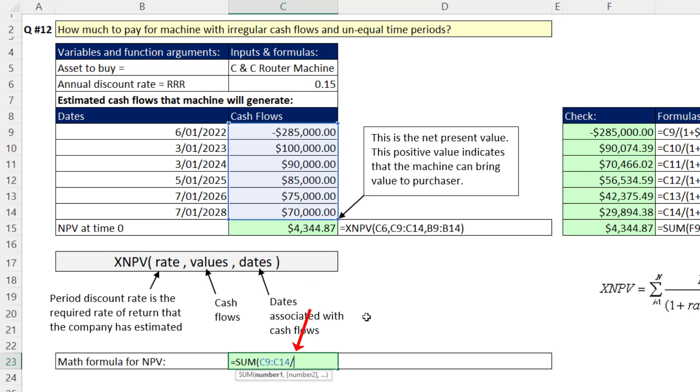So we divide, open parentheses, 1 plus, and there's our rate. Close. And a caret. Open, open. All the dates minus the first date. Close parentheses. Divide by 365. Close parentheses. Close, close.